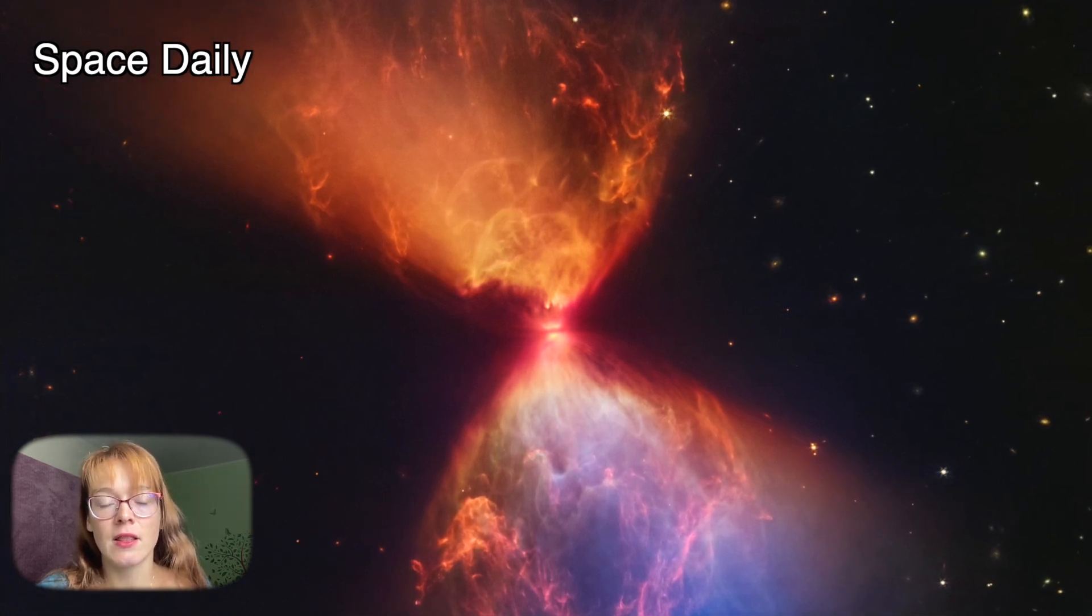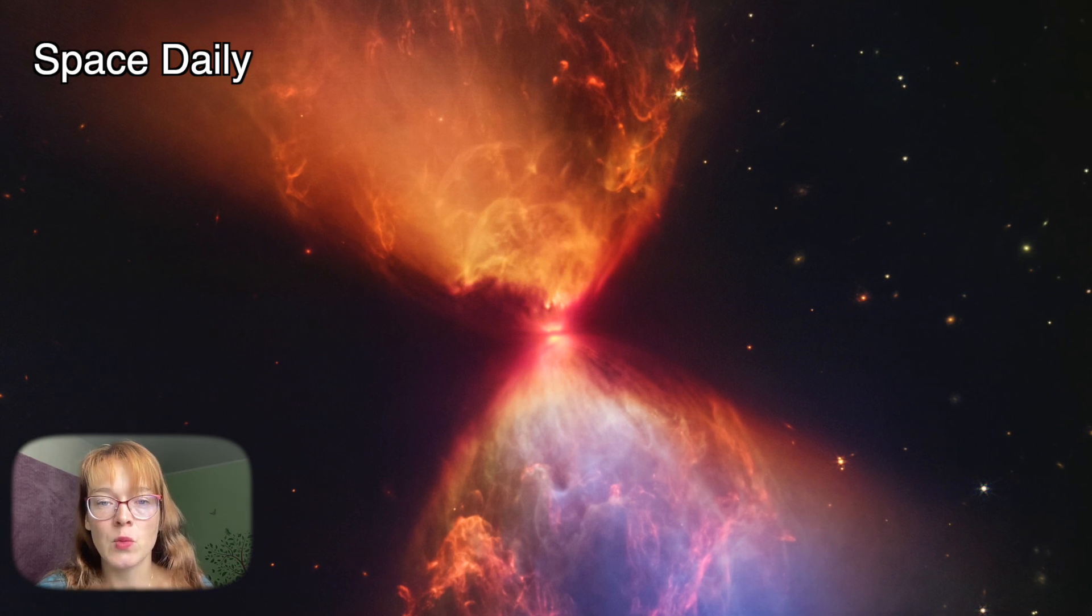An edge-on protoplanetary disk is seen as a dark line across the middle of the neck. Light from the protostar leaks above and below this disk, illuminating cavities within the surrounding gas and dust.